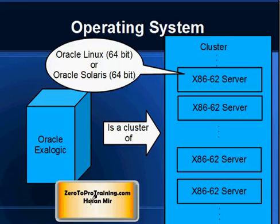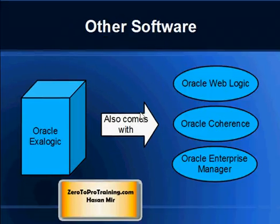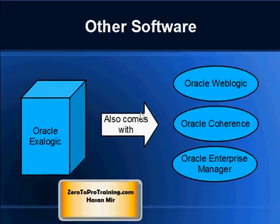Other important software that Oracle ExoLogic comes with includes Oracle WebLogic, Oracle Coherence, and Oracle Enterprise Manager. There is a clustered installation of the software taking advantage of all the servers. Oracle WebLogic is the application server that hosts the application — and that is the primary reason you purchase Oracle ExoLogic.